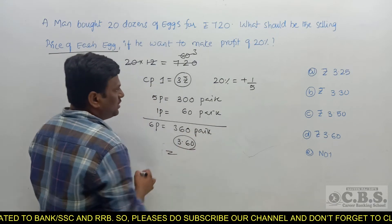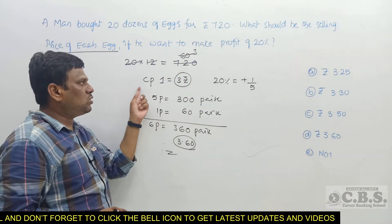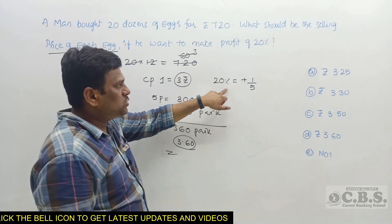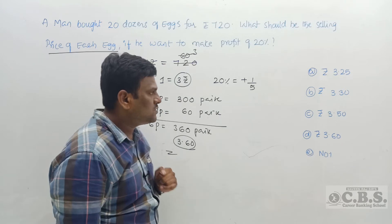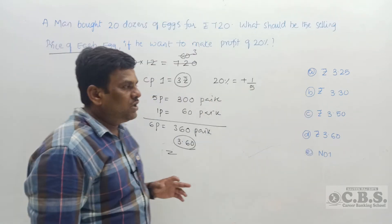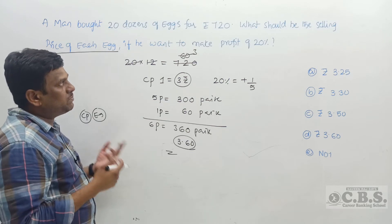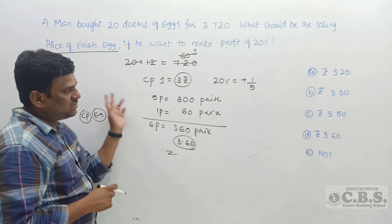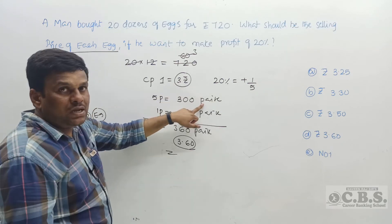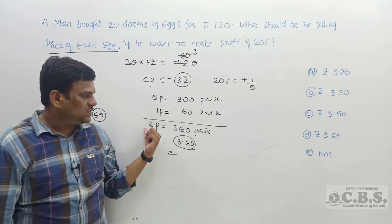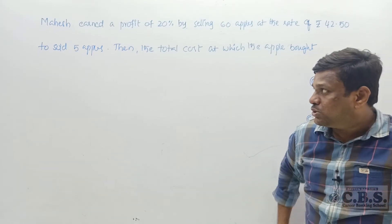Five parts = 300 paise, so one part = 60 paise. Six parts (selling price) = 360 paise, which is 3 rupees 60 paise. Option D is the right answer. Rather than finding total profit and dividing by 240, it's faster to find the cost price per egg (3 rupees), apply 20% (1 by 5), get 5 parts = 300 paise, add one part profit = 60 paise, giving selling price of 3 rupees 60 paise.